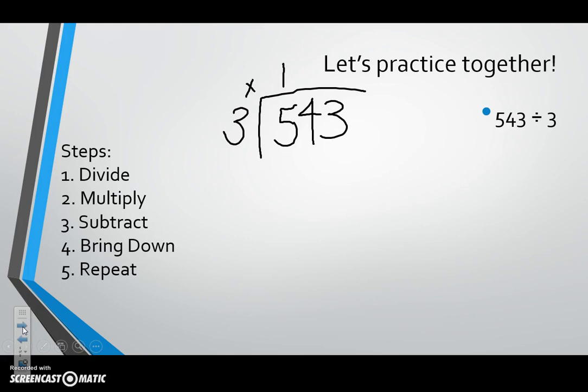We can multiply these two numbers. Three times one is three. We subtract, giving us two, and we bring down the number next to the one we were just working with, leaving us at 24.